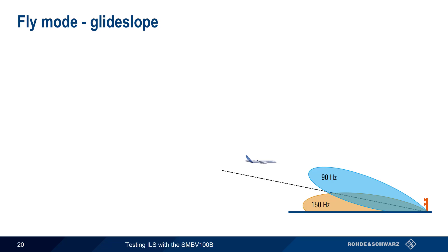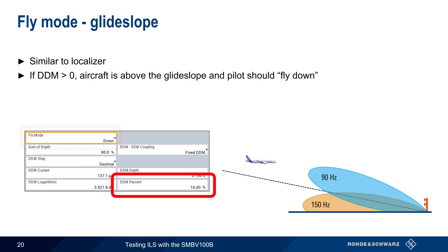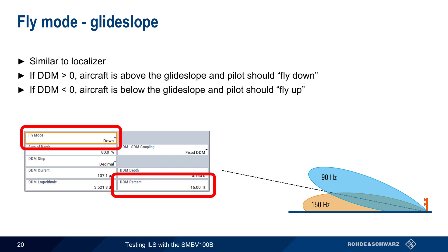The fly mode in glide slope also works much the same way as it does for localizer. If the difference in depth of modulation is positive, this means the aircraft is above the glide slope and the pilot should fly down. Conversely, if DDM is negative, this means the aircraft is below the glide slope and the pilot should fly up.